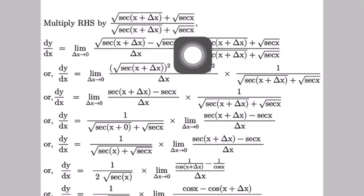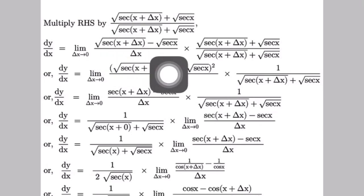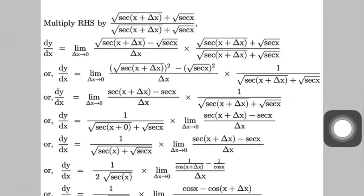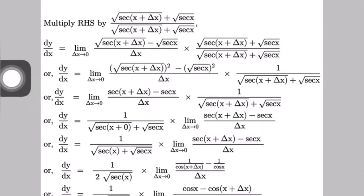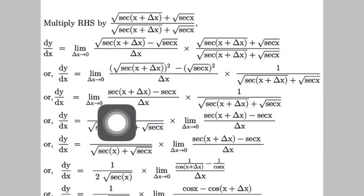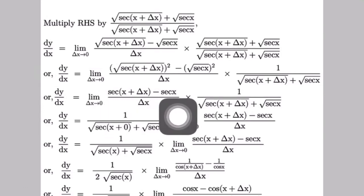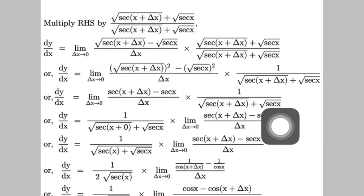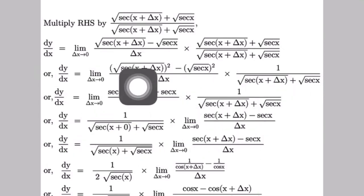Using the identity (a−b)(a+b) = a² − b², we square these terms. The square of √(sec(x + δx)) gives sec(x + δx) and the square of √(sec x) gives sec x. So dy/dx equals limit as δx tends to 0 of [sec(x + δx) minus sec x] all divided by δx times 1 divided by [√(sec(x + δx)) plus √(sec x)].